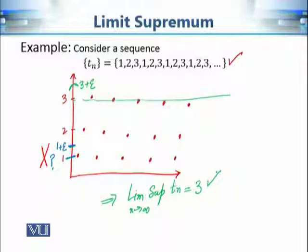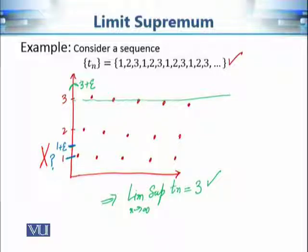This example is important to remind ourselves that given a divergent sequence, we cannot calculate its limit, but we can still calculate its LIMSUP. This will help in defining the root test, which will use the LIMSUP — reducing the condition that some limit must exist, since the LIMSUP always exists.